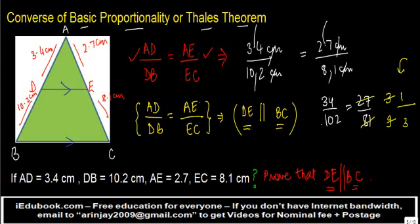To make things simple, if I just divide 102 by 34, ideally I should get 3. Is that the case? 102 divided by 34: 3 times 4 is 12, carry 2; 3 times 3 is 9, plus 1 is 10. So 1 by 3 is equal to 1 by 3.